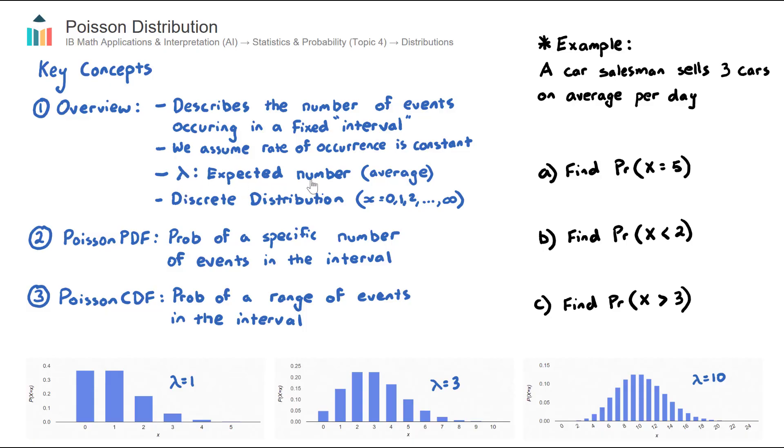Lambda is the expected number of events in the time interval. This Poisson Distribution is a discrete distribution, which means that the possible values are whole numbers from zero up to infinity.